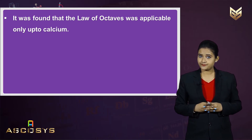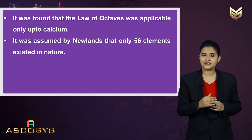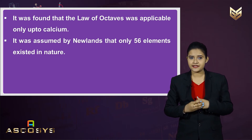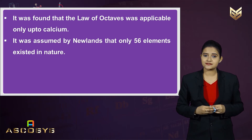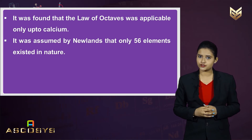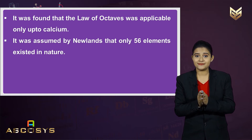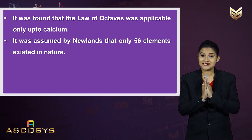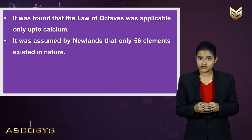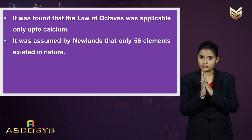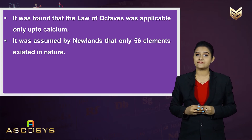Next, Newlands assumed that only 56 elements existed in nature and that no more elements would be discovered in the future. But later on, several new elements were discovered whose properties did not match or fit into the law of octaves.